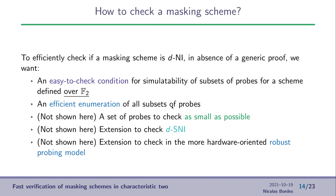So, to check a given gadget, a given masking scheme, when we don't have a generic proof, we want, first, an easy-to-check condition for the simulatability of a given set of probes. And also, if we want to have gadgets over F2, we want this easy-to-check condition to be valid over F2. And then, once we have a condition that is easily checked, we want to efficiently enumerate over all the subset of probes.